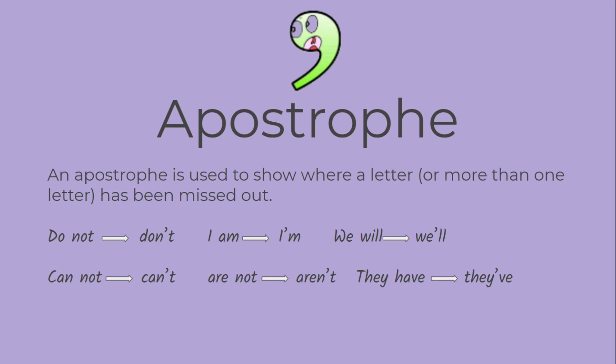Apostrophe. An apostrophe is used to show where a letter or more than one letter has been missed out. For example, 'do not' becomes 'don't.'